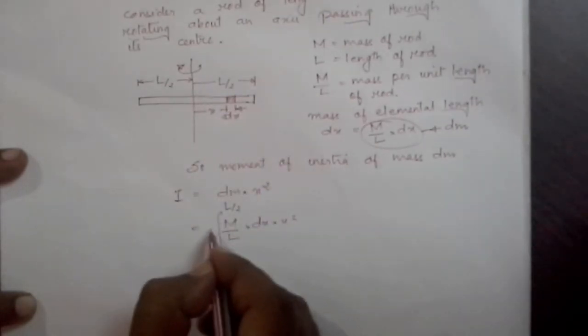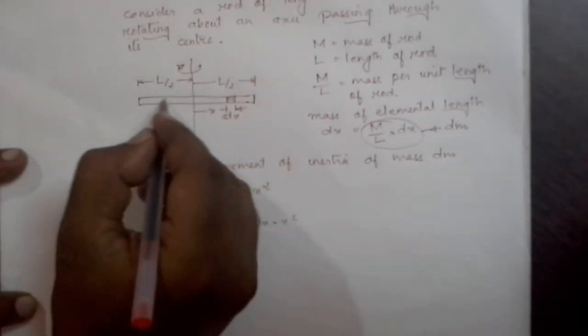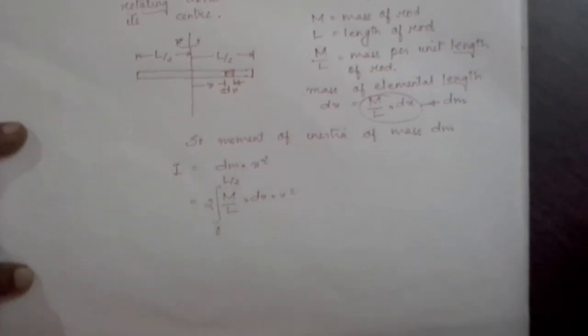Since the rod is symmetrical about the axis, we can multiply by two instead of finding the integration for this part of the rod.